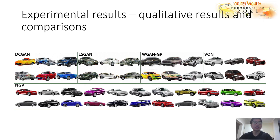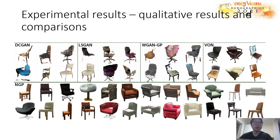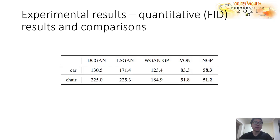Now, moving to the results. Here we show qualitative results on cars in comparison with neural-only methods, such as BSCGAN, LSGAN, WGAN-GP, and VON. This is the results in the comparison on chairs as well. We also show quantitative results and comparisons against those baselines. The metric here is the FID score, which roughly measures how close a set of generated images is to real images. Our method outperforms these baseline methods both qualitatively and quantitatively.